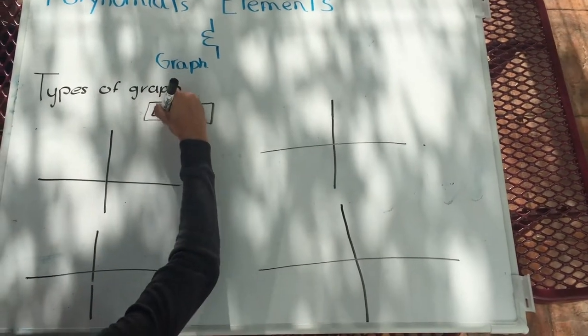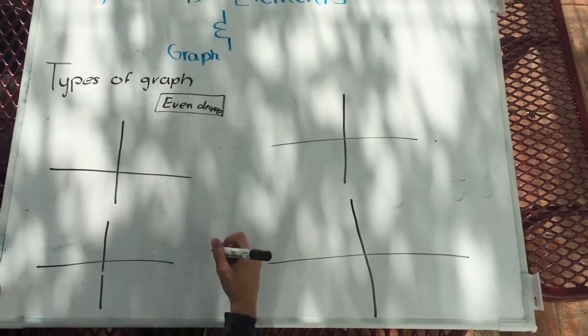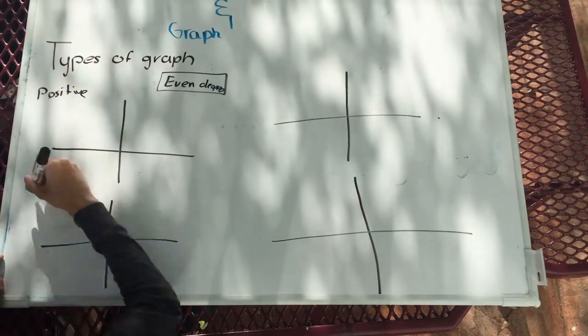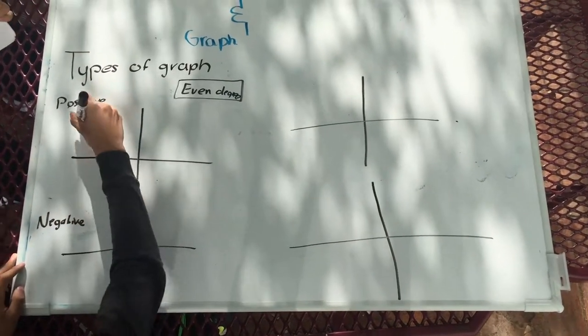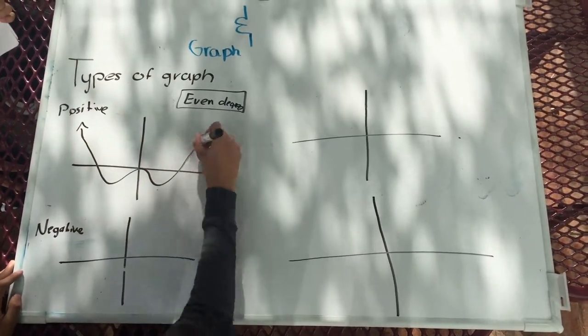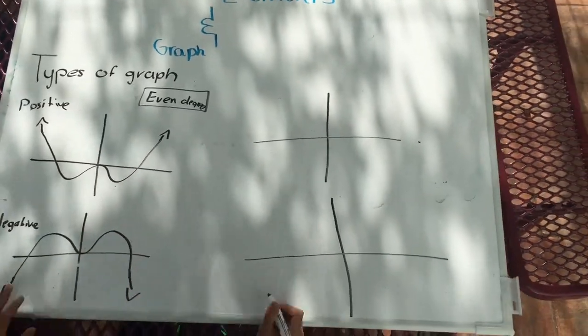There could be different types of graphs. When the polynomial has an even degree with a positive leading coefficient, both arms will end up. When the polynomial has an even degree with a negative leading coefficient, both arms will end down.